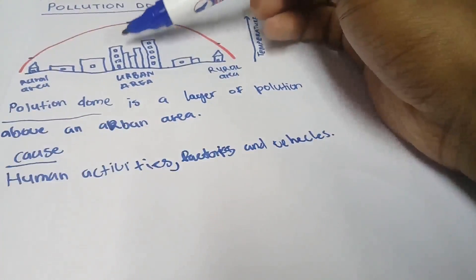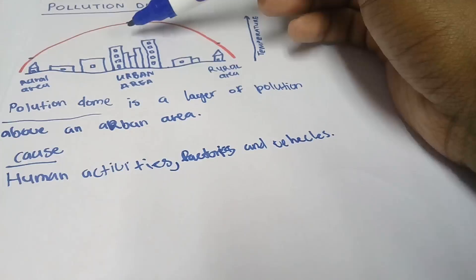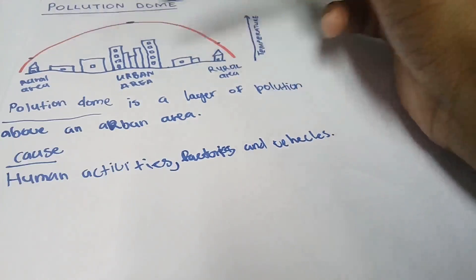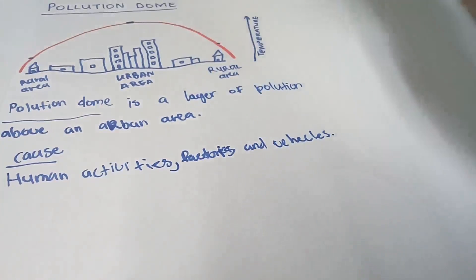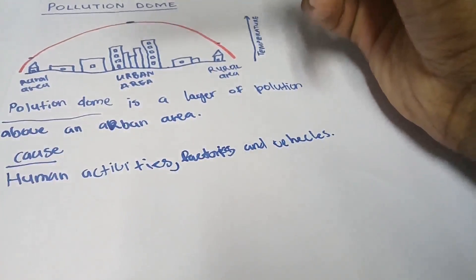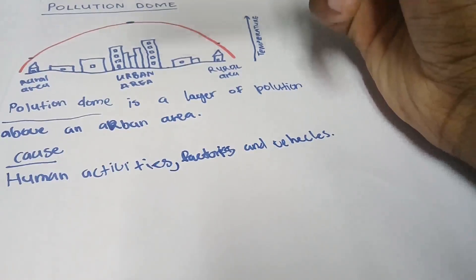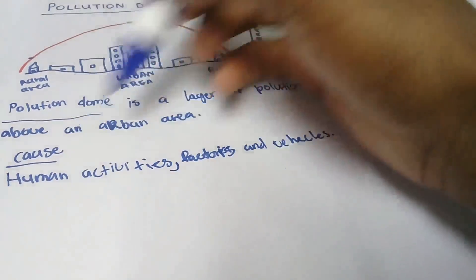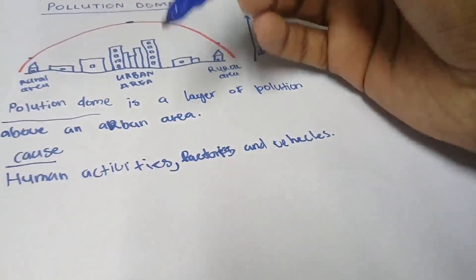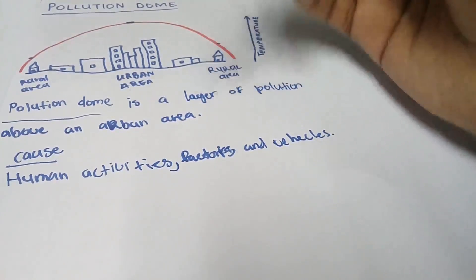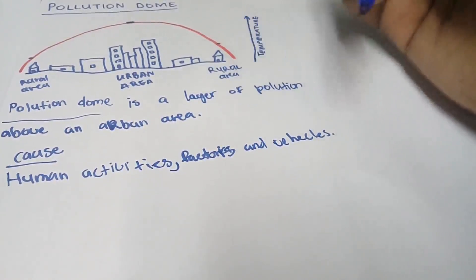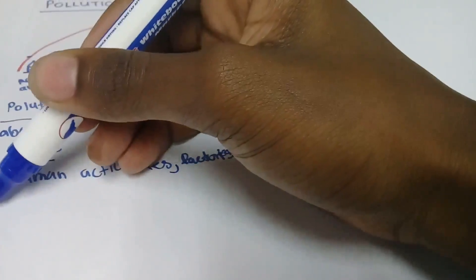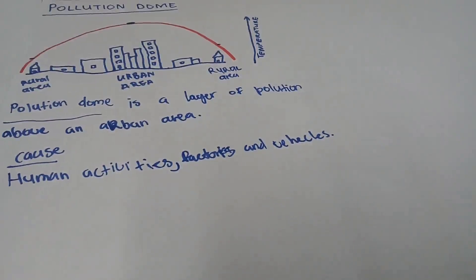The air above urban areas is very polluted. You can actually see the pollution dome during the day when you're far from the city — above the urban area there is something like a big cloud lying over it. This is caused by factories and manufacturing industries, and also vehicles releasing carbon dioxide and other gases through combustion.